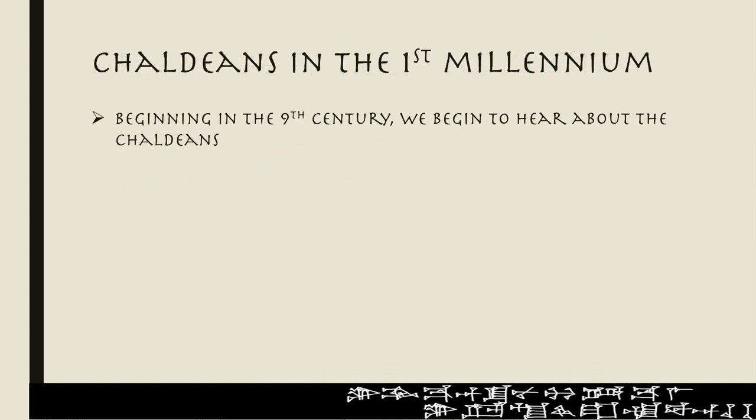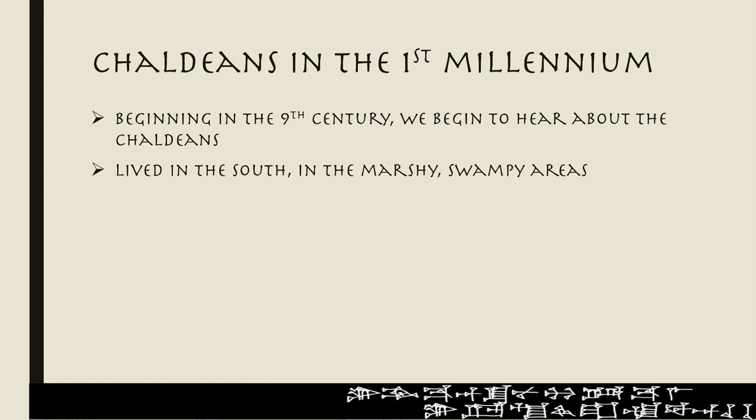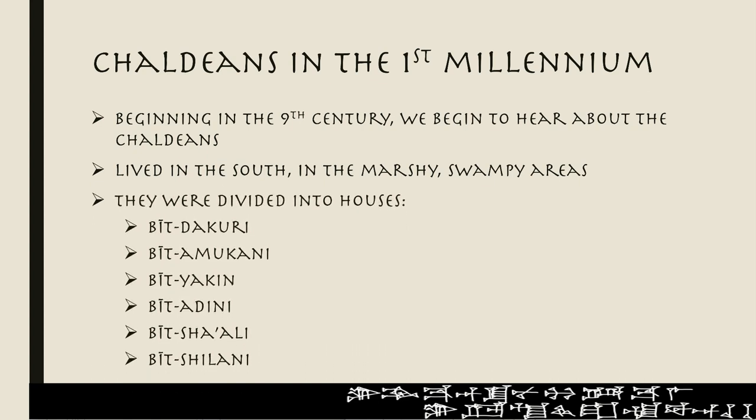In the beginning of the first millennium, around the 9th century, we begin to hear about a people group called the Chaldeans. They lived primarily in the south, in the marshy, swampy areas, and they were divided into houses: Bit Takori, Bit Amukhani, Bit Yaqin — 'bit' means house, house of — Bit Adini, Bit Sha'ali, and Bit Shilani.